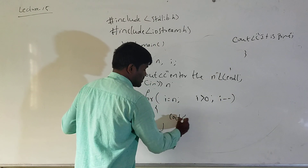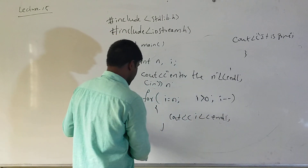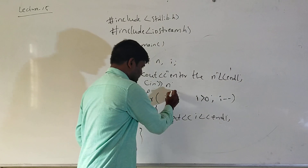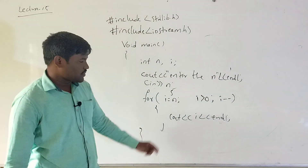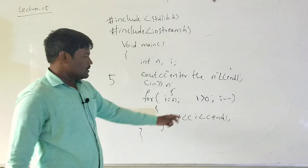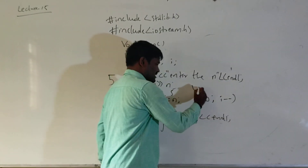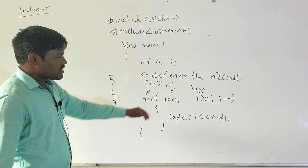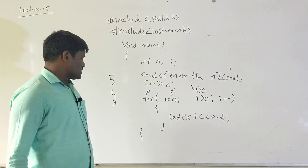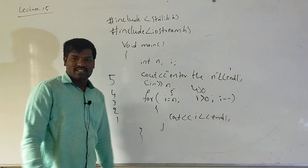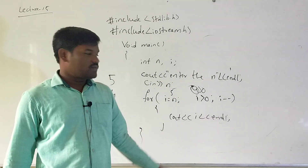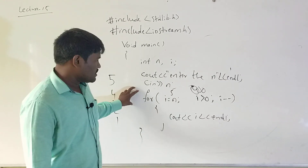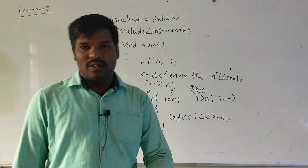Consider n equal to 5. 5 is greater than 0 — condition is true, it prints 5. i-- makes i become 4. 4 is greater than 0 — prints 4. Then i becomes 3, prints 3. Then i becomes 2, prints 2. Then i becomes 1, prints 1. When i becomes 0, 0 is greater than 0 is false, so it comes out of the loop. This is the program for printing numbers in reverse order.